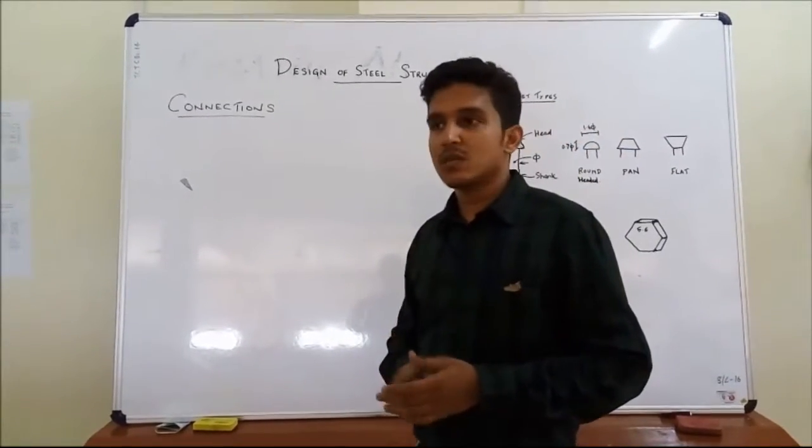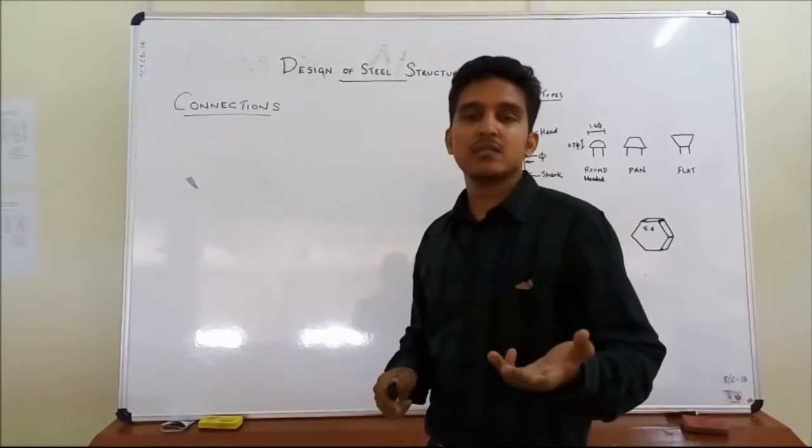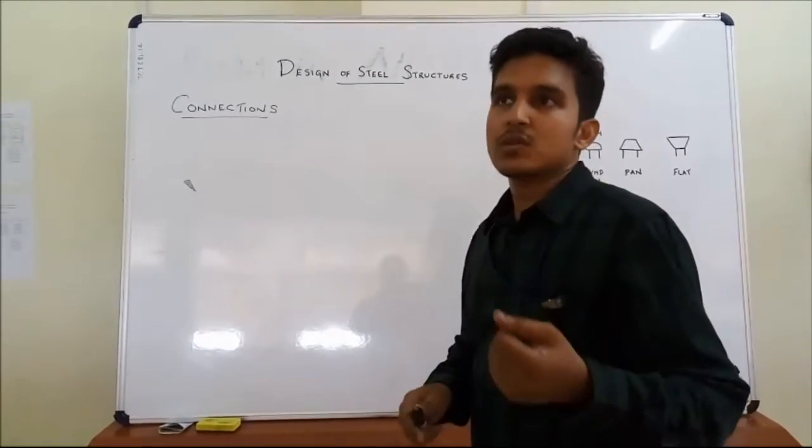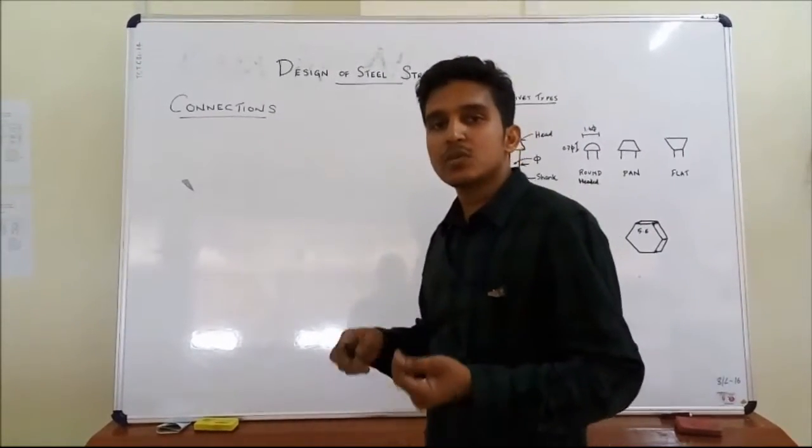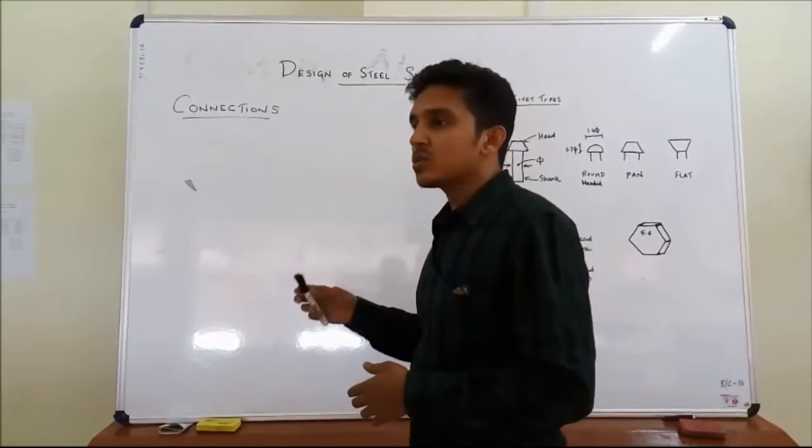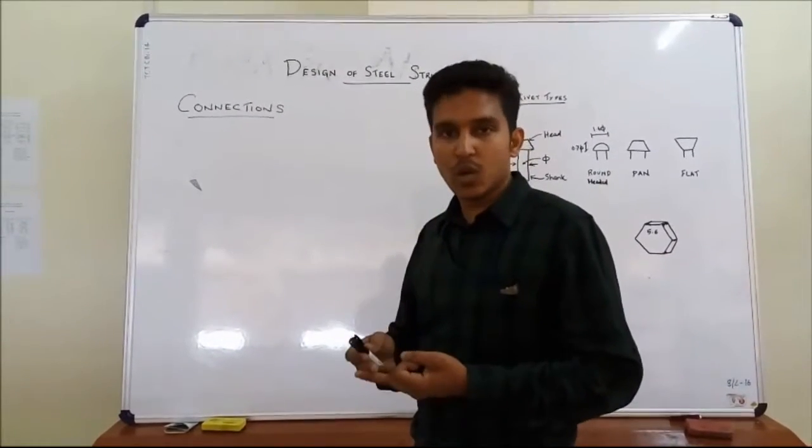There are different types of connections which include rivets, welds, pins and also bolts. Basically, pins are used only in mechanical structures and welds, bolting and riveting are the most common.